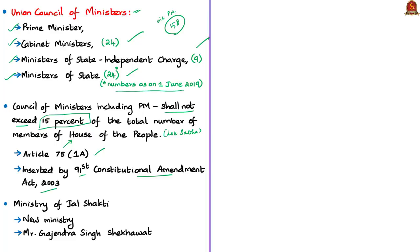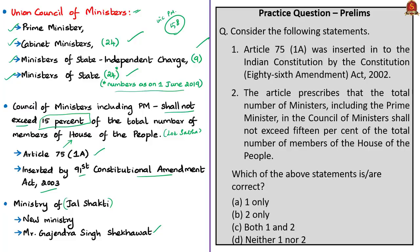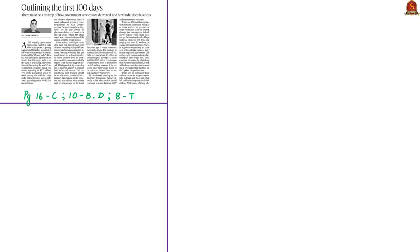A new ministry has been created called the Ministry of Jal Shakti, headed by Gajendra Singh Shekhawat. It is stated that this ministry is created by merging the Ministry of Water Resources and the Ministry of Drinking Water and Sanitation, though there are still some confusions over this matter. The issue will be clarified with the official change of allocation of business rules to be issued by the cabinet. Have a look at the practice prelims question — we shall discuss at the end of the analysis session.